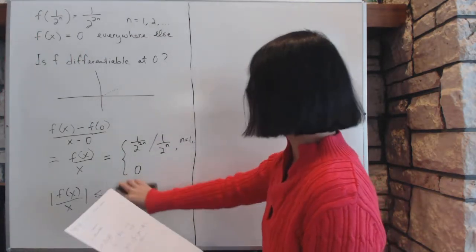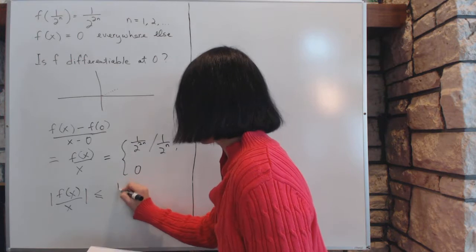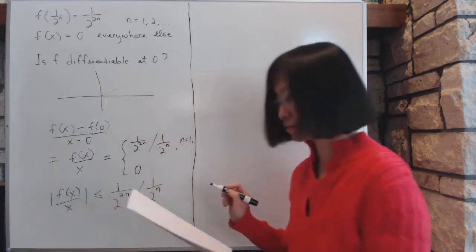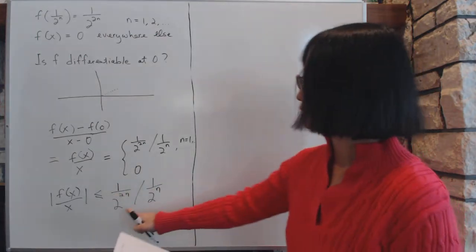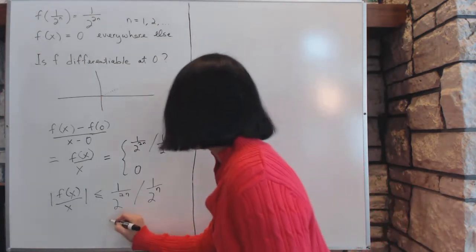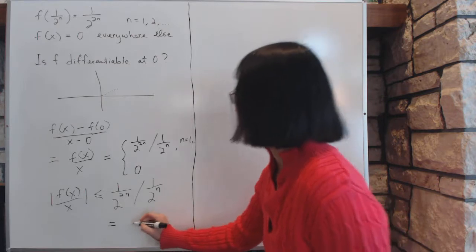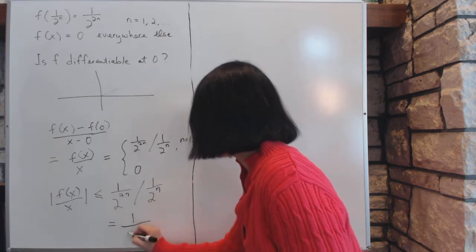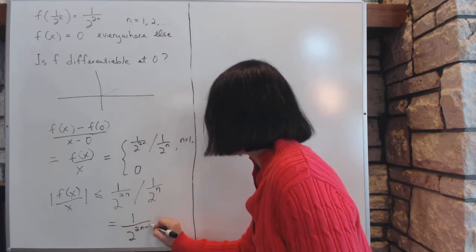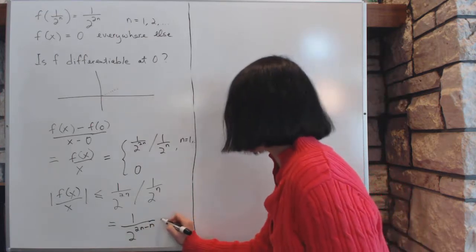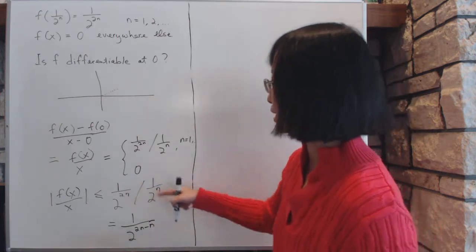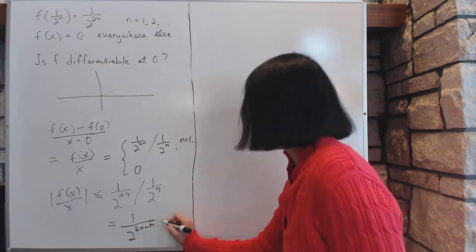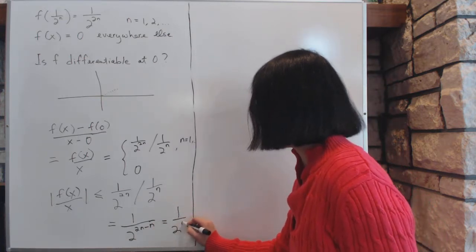We'll write it as 1 over 2^(2n) divided by 1 over 2^n. What exactly is that? That is the same as 2^(2n - n). It's important to keep track of these indices and make sure you don't make a mistake with the operations. By the time you work it out, this equals 1 over 2^n.